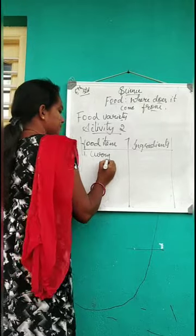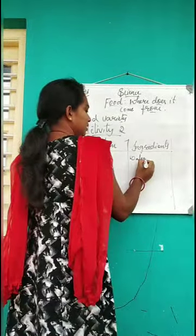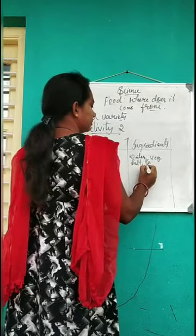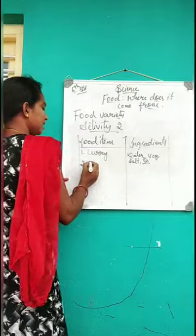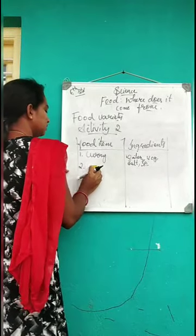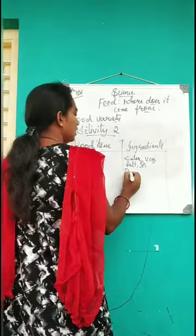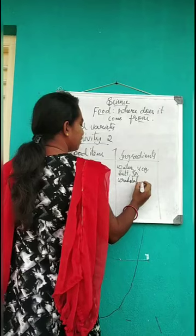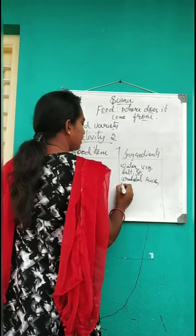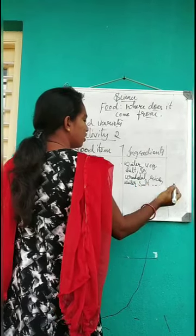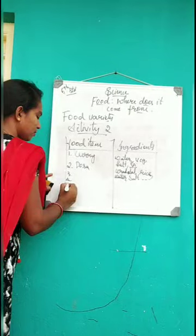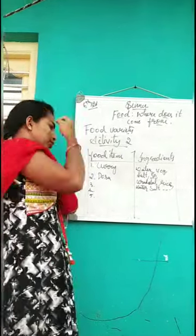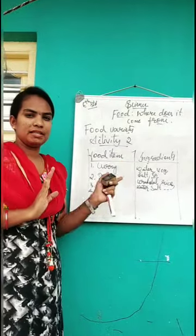I will write curry. For curry, what will you use? Water, vegetables, salt, and some spices — these you will use. And then I will take dosa. For dosa, you will use urad dal, rice, salt, and water. Like that, write five food items and their ingredients. Write these two activities in your book. Make a table and write five examples each.